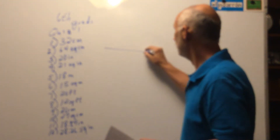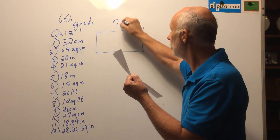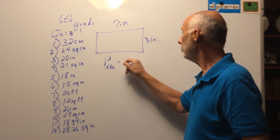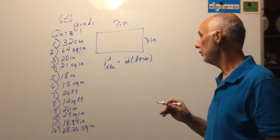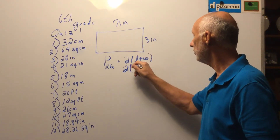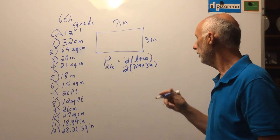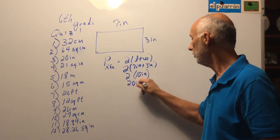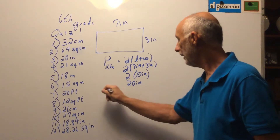The next figure was a rectangle — seven inches by three inches. Start with the perimeter formula: perimeter equals two times the sum of L plus W. Some people prefer two times L plus two times W; either works. Replace L with seven inches and W with three inches. Using order of operations, do parentheses first: seven plus three is ten inches, then multiply two times ten to get 20 inches.